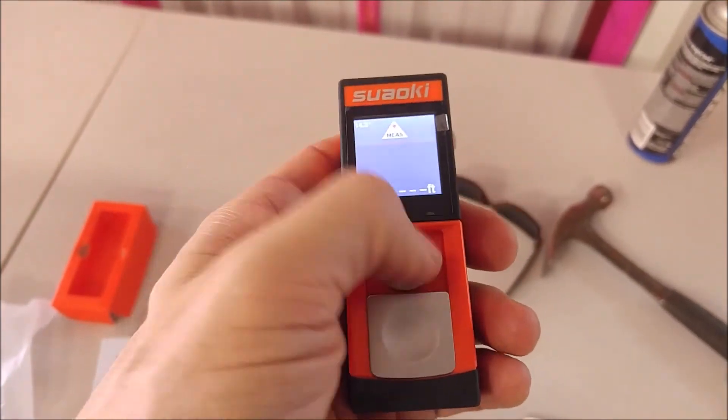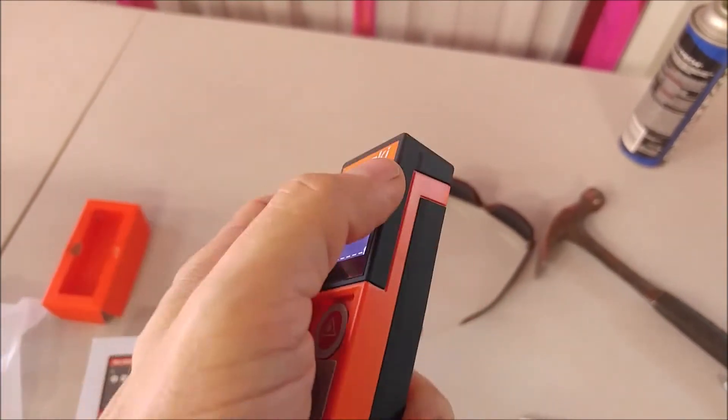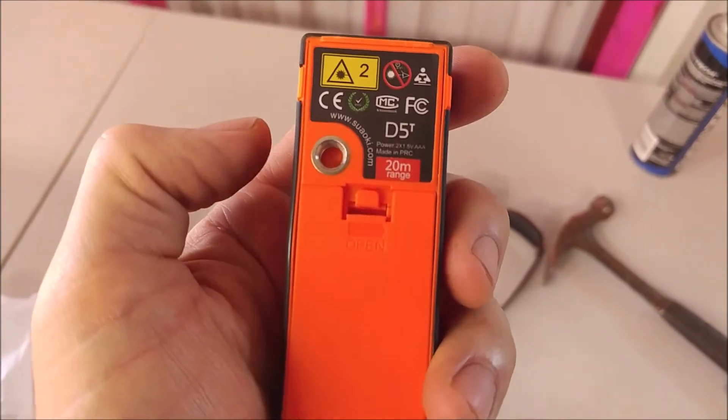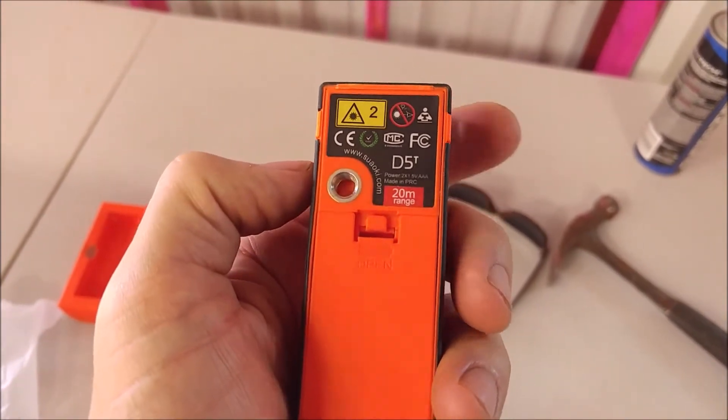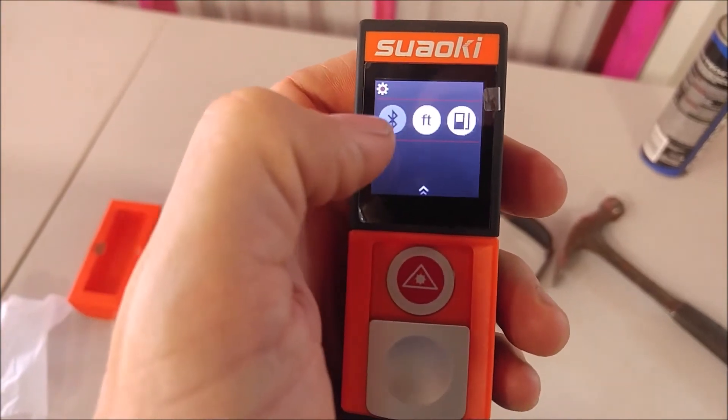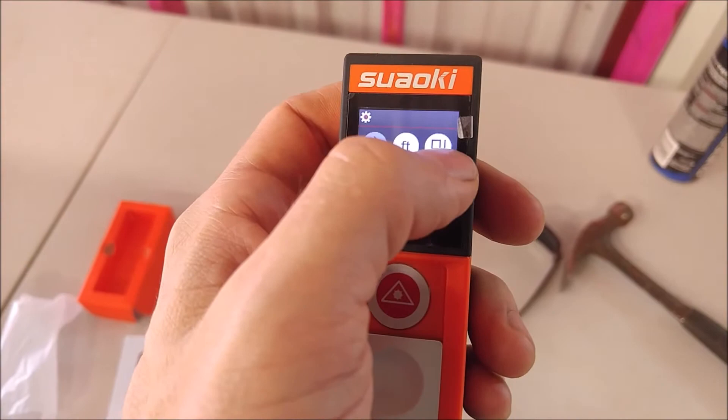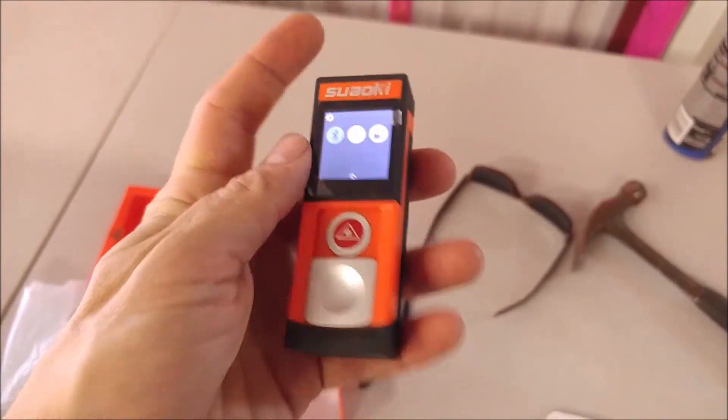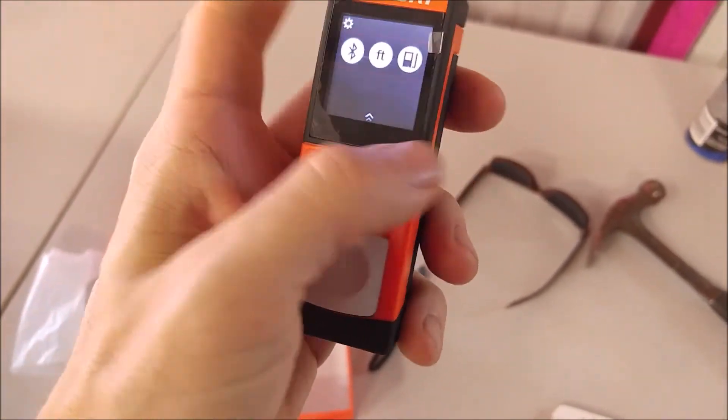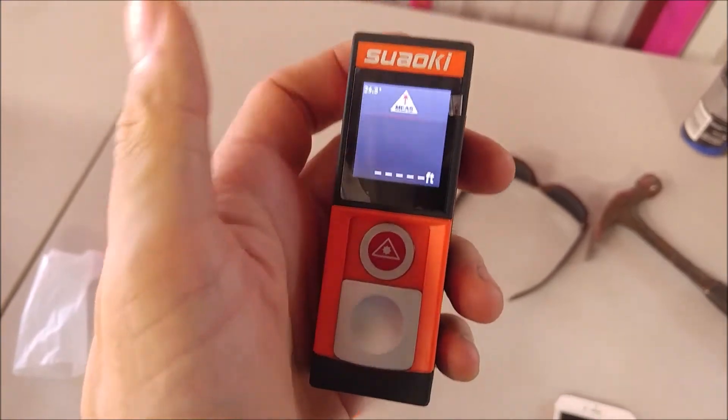Pretty simple, very easy to use. You just point and click. It's got a quarter inch stud on the back so you can mount it to a tripod or a transit. You can turn on Bluetooth, change it from feet to meters, and you can set the reference point to be the front of the device, the back of the device, or the middle of the device.